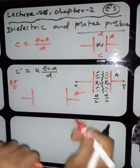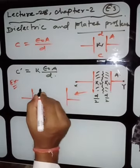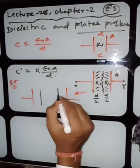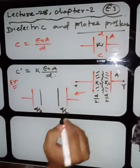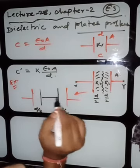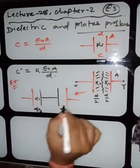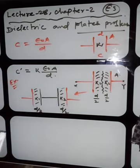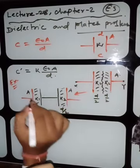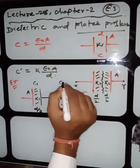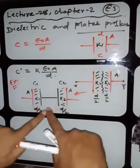This is the dielectric boundary. The separation of each part is d/2. These two boundaries were in contact, so make them in contact with a conductor. Now this is one capacitor with dielectric K1 and this is another with K2. The plate area remains the same because we have cut in this way.